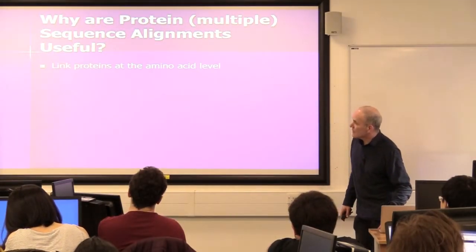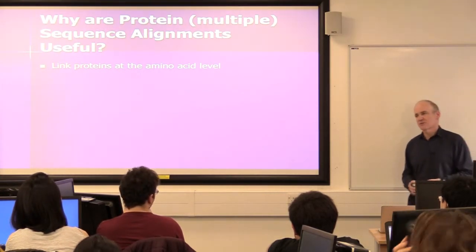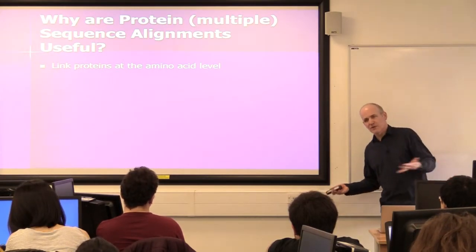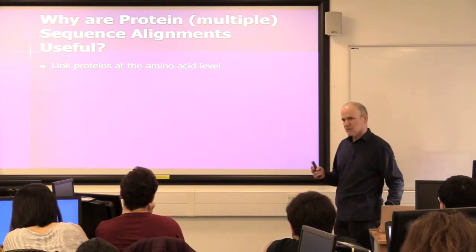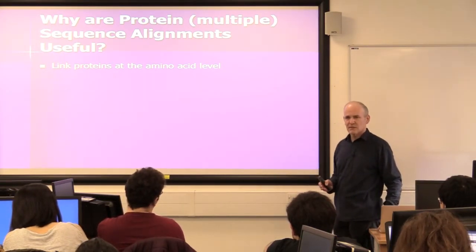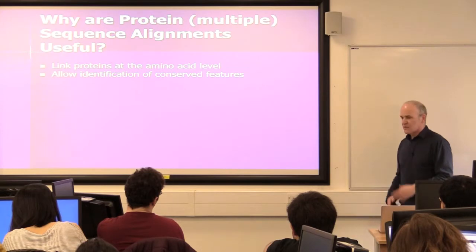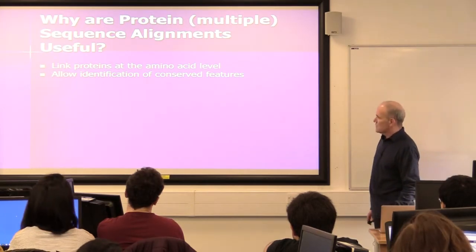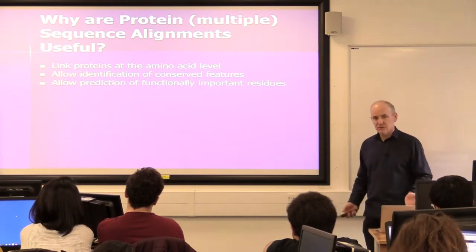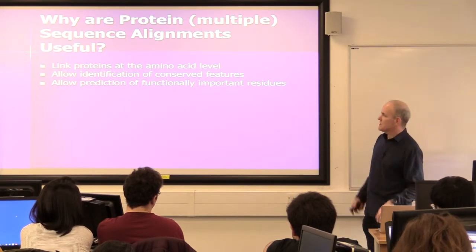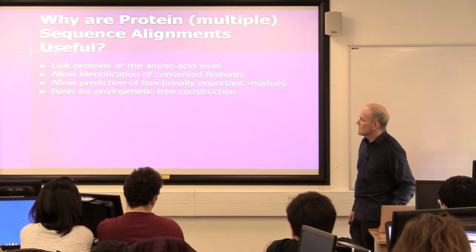Why are they useful? The first thing alignments do is they link the amino acids. They link the proteins at the amino acid level. So you can say protein A and protein B are similar. But when you do the alignment, you get a linkage of individual amino acids. So if you know a lot about a given amino acid in one protein, and it's the same amino acid in the other protein, you can maybe say something similar about that. You can find conserved features, and that's a lot of what we're going to do in a bit. So you can find positions that are identical across a big family of sequences or have shared properties. You can predict function and important residues from alignments.